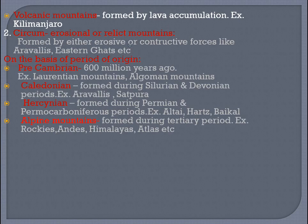Circum-erosional or relict mountains are formed by either erosive or constructive forces. Examples include the Aravallis and the Eastern Ghats.